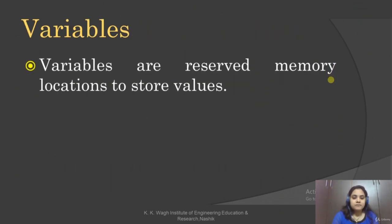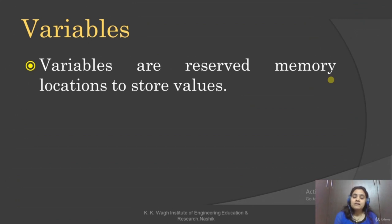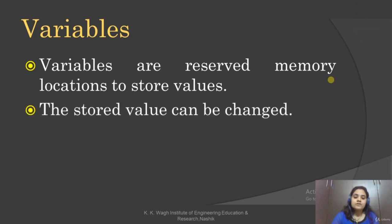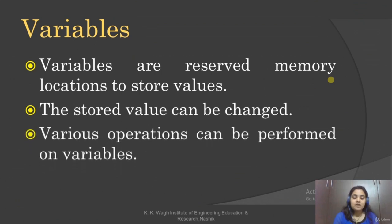What are variables? Variables are the reserved memory locations to store values. For example, we can have a variable called 'length' storing 10 centimeters. Likewise, we can assign different variable names and assign values according to our situation. The stored value can also be changed, and various operations can be performed on variables.